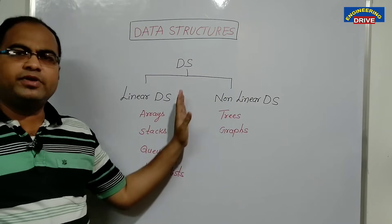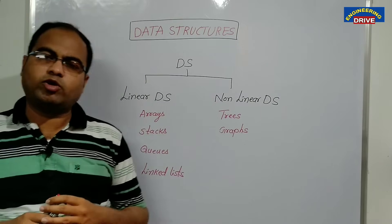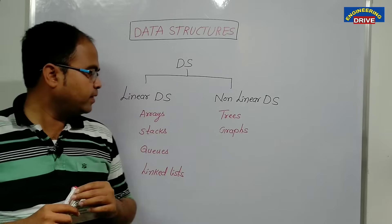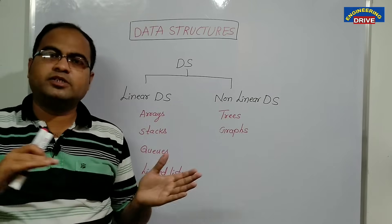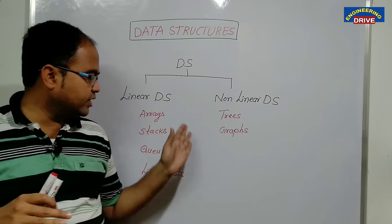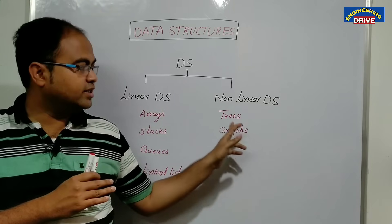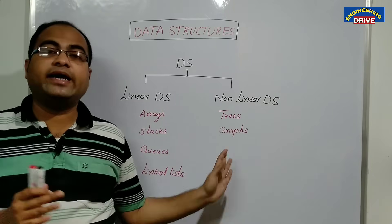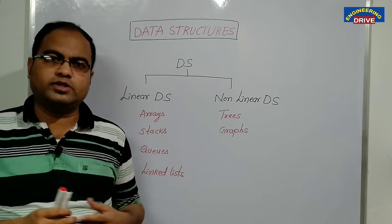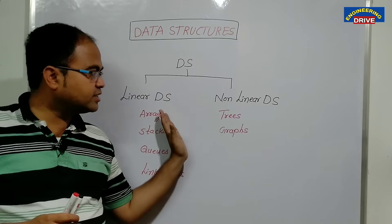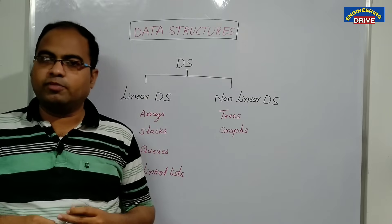What is the main difference between linear and non-linear data structures? One important difference is that a linear data structure stores the data in a proper sequential order, whereas a non-linear data structure stores data in a hierarchical format or level format. How linear and non-linear data structures differ, we are going to see in our upcoming videos.